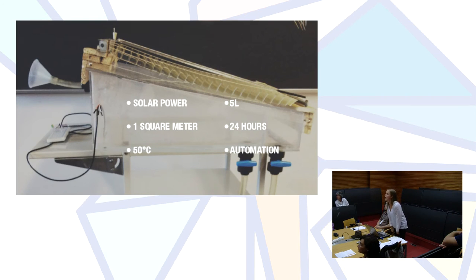So to recap, the product is entirely powered by solar power, and actually two kinds: direct beams and solar cells. The product doesn't take up more than one square meter. That's because it is used in a lab where space is restricted. The temperature never goes above 50 degrees Celsius. And the capacity of the tank is five liters. Also, the process doesn't take more than 24 hours. And the product has reached a level of automation because we integrated both sensors.